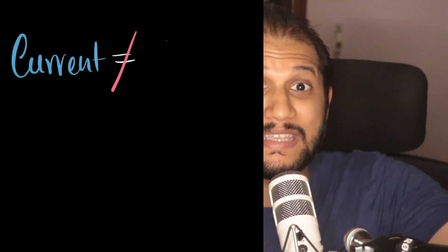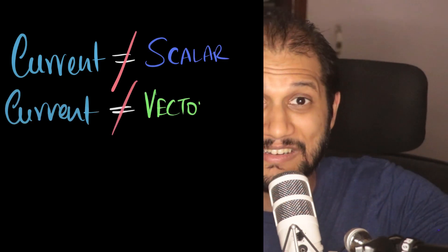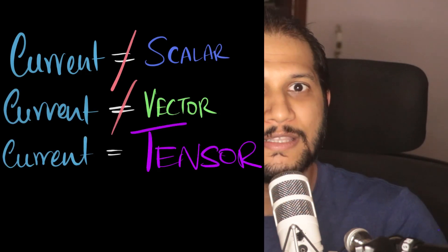So current must be a scalar quantity. End of story, right? Well, what about their direction? They do have a direction. Scalars are not supposed to have a direction. What to do about them? Maybe currents are special scalar quantities that also have direction. And in fact, some people think that because current is so special, it's neither a scalar, it's not a vector, maybe it's a tensor.